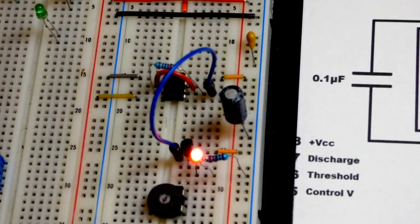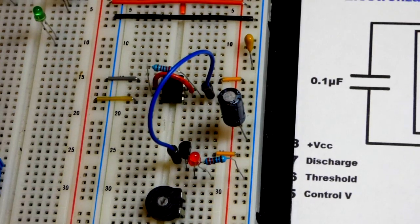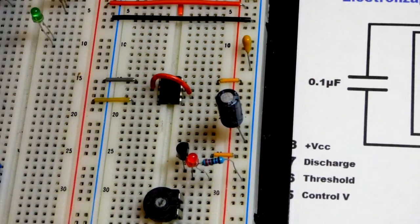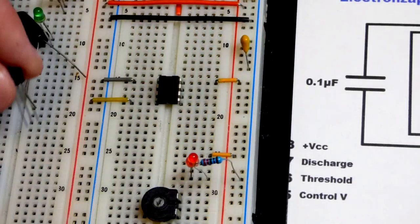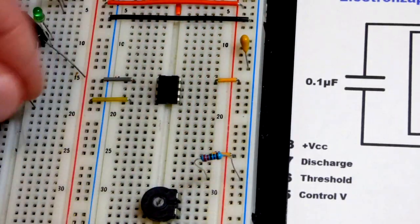The 2N3904 is wired as an emitter follower. We're going to zoom in, I'm going to turn off the power supply and then just pluck the components really quick, because the step-by-step build is the easiest way to see where all the components are.